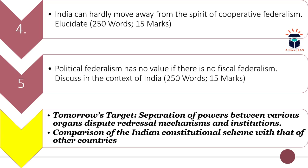These three are the questions from your dynamic part. The fourth and fifth questions are from your static part. The fourth question is: India can hardly move away from the spirit of cooperative federalism — elucidate. The fifth question is: political federalism has no value if there is no fiscal federalism — discuss in the context of India. The word limit for both is 250 and the maximum marks are 15 each.